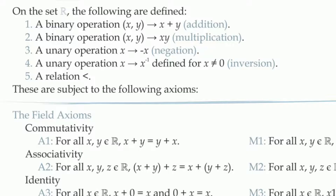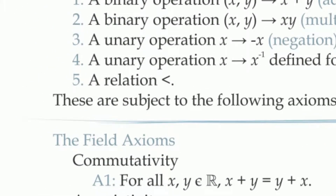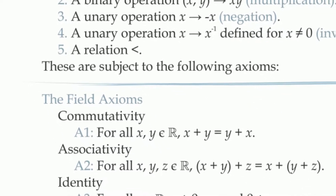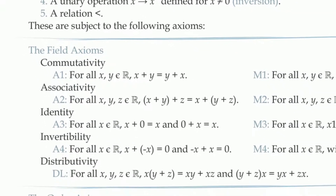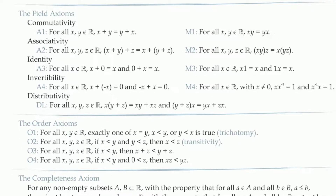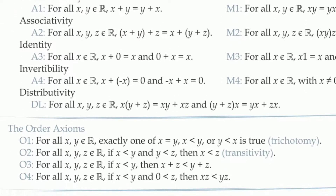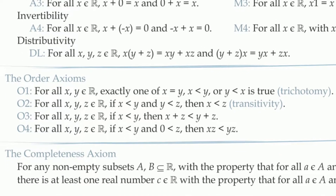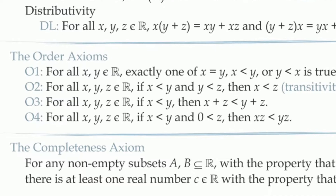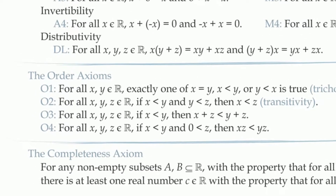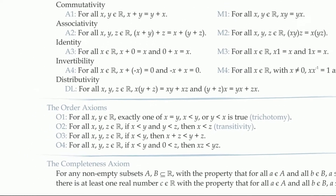The last part of the definition tells us that there's also a relation defined on the set of real numbers, denoted with the less than symbol. The properties of all of these things — the binary operations, the unary operations, the relations, and the constants 0 and 1 — are described in the axioms that follow. We can think of the field axioms as defining the behavior of the constants 0 and 1, the binary operations addition and multiplication, and the unary operations negation and inversion. We can think of the order axioms as defining the behavior of the less than relation. And finally, the completeness axiom is a slightly more complicated axiom that describes how the real numbers can be thought of as a continuous straight line. This is what differentiates the real numbers from other number systems like the rational numbers.